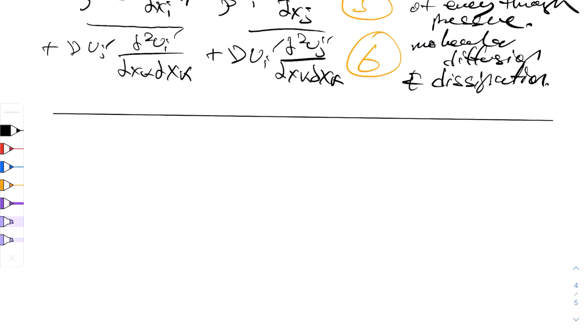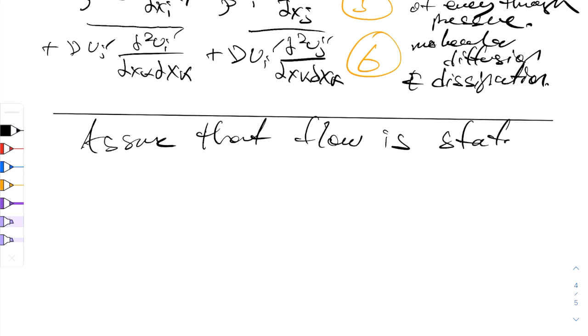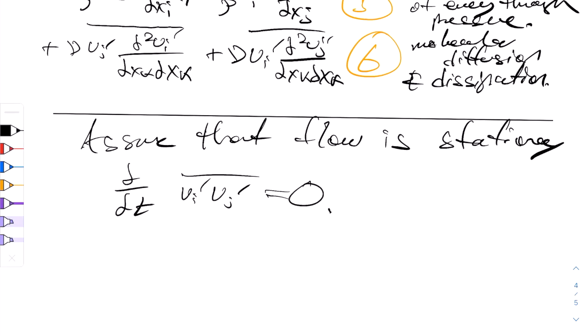These terms have their names and corresponding modeling because of how they transport the Reynolds stress. If we assume that the flow is stationary, then term 1 would vanish, and we might write partial of partial t of ui prime uj prime bar, the Reynolds stress, is equal to 0. We'll call this equation 14.